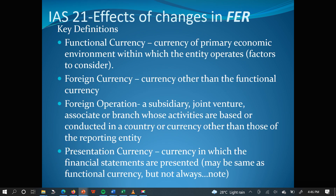Every standard comes with its own peculiar terms, and IAS 21 really does have important terms. Functional currency is the currency of the primary economic environment within which the entity operates. For Ghana, the functional currency is the Ghana cedi. In America, it's the dollar. In Europe, it's the euro. In Togo, it is the CFA. It is the currency that drives the factors of production.